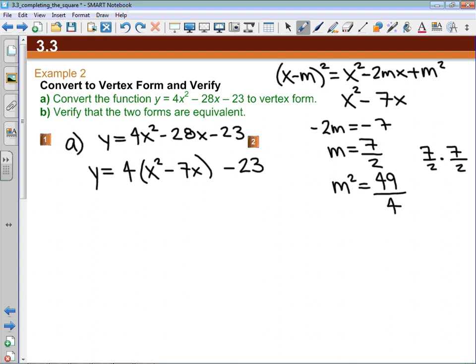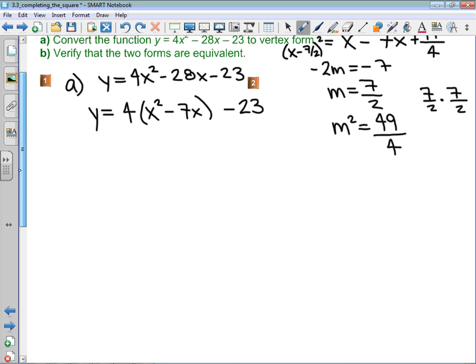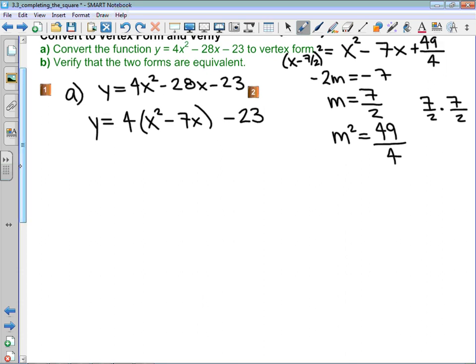Now, what that means is that if I can somehow manipulate this and get plus 49 over 4, this will factor. I ran out of room here, but this would be x minus 7 over 2 squared. Ugly fraction, but we have to be able to work with numbers that aren't pretty integers or natural numbers. So, knowing that we need 49 over 4 means that inside this bracket, I am going to add 49 over 4 and subtract 49 over 4 within the bracket itself.